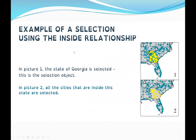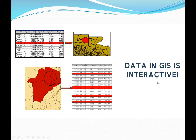An example of selection using the inside relationship: in picture one, the state of Georgia is selected as the selection object. In picture two, all the cities that are inside this state are also selected. Data in GIS is very interactive — we may have data that appears on a map and also has its attributes. The red data can show on a map and also be in a relation or table.